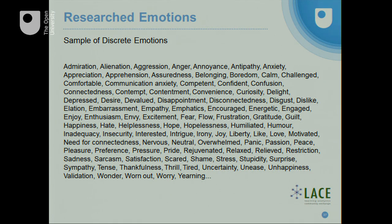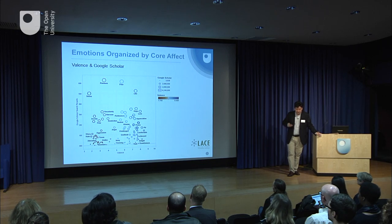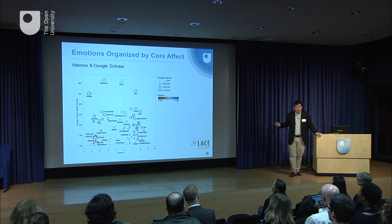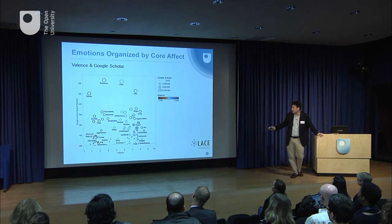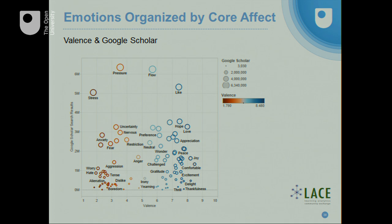Why would you want to categorize emotions? Because there are a lot of them. When people look at the role of emotions in learning, they research a large number of discrete emotions. This is just a sampling list from a LACE report that Bart worked on. One way I chose to categorize them is to use sentiment analysis to put negative words on the left and positive words on the right, then I plugged every word into Google Scholar to see how much research is going on with each emotional word. That organized the energy level in terms of research activity.